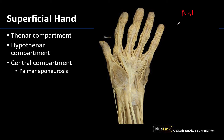Looking superficially in the palmar region of the hand, the thing that stands out most is this triangular white opaque region, which is the palmar aponeurosis. This is a thickening of the deep fascia of the hand. Some tendons, such as the palmaris longus, will attach there. The palmar aponeurosis is really there to protect the deeper structures — the nerves, arteries, and tendons located more in the central compartments of the hand.